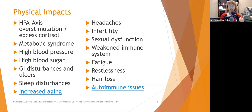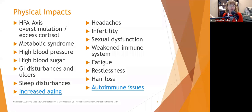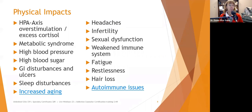High blood pressure, high blood sugar, and GI disturbances and ulcers are also impacts. When we're in fight-or-flee mode, our body isn't worried about digesting food — it says let's clean out the system and focus on fighting or fleeing. That's why systems run faster under stress, causing stomach cramps or diarrhea. We also see people develop ulcers, as stress upsets the gastric microbiome, leading to proliferation of bad bacteria that can cause stomach ulcers and potentially stomach cancer.